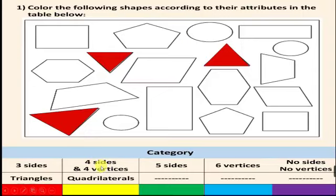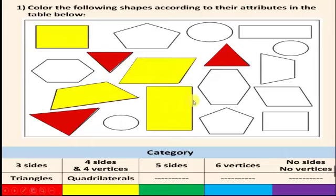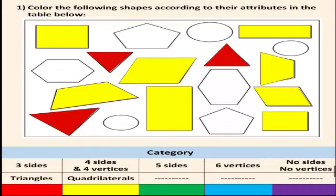The second category: I will classify shapes that have four sides and four vertices — they are the quadrilaterals. I will color them in yellow. I found eight quadrilateral shapes and colored them all in yellow.